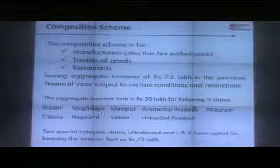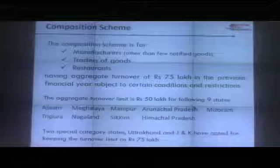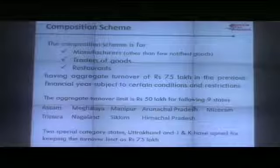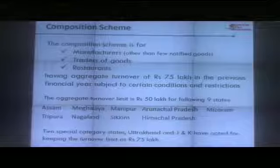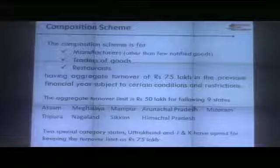The nine special category states with a 50 lakh threshold are Assam, Meghalaya, Manipur, Arunachal Pradesh, Mizoram, Tripura, Nagaland, Sikkim, and Himachal Pradesh. Uttarakhand and J&K have opted to keep the composition scheme threshold at 75 lakhs.